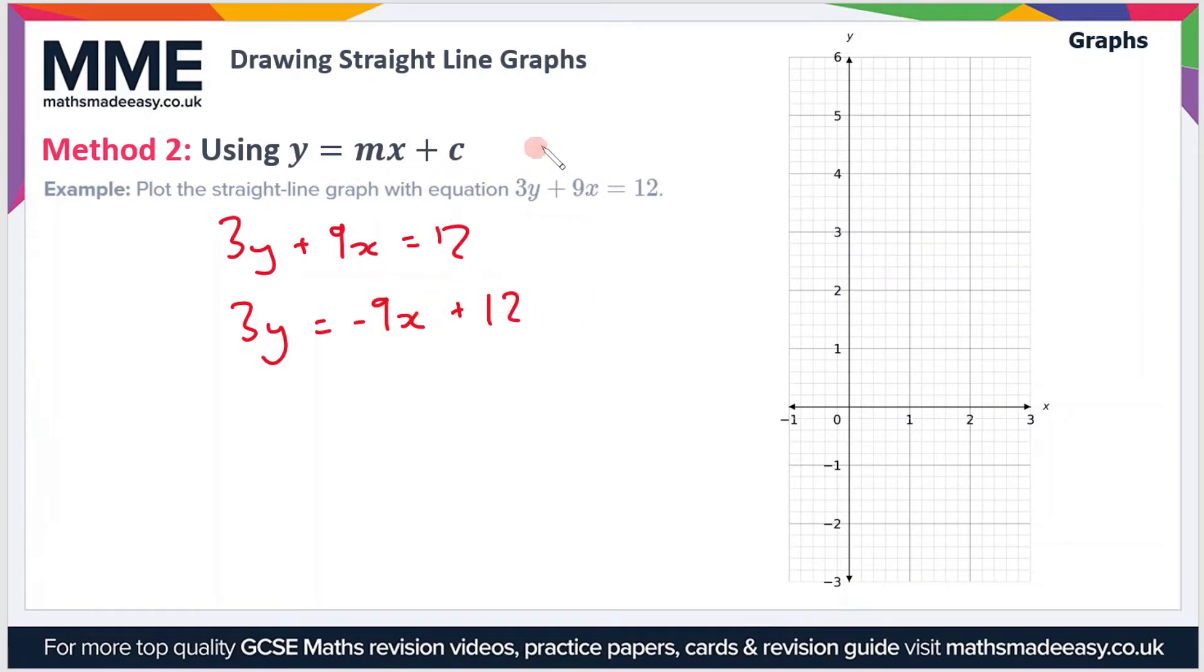We want it in the form y equals mx plus c, so this is a bit closer to the form that we want. All we have to do is divide both sides by 3, so that should give us minus 3x plus 4. That's our equation of the straight line.